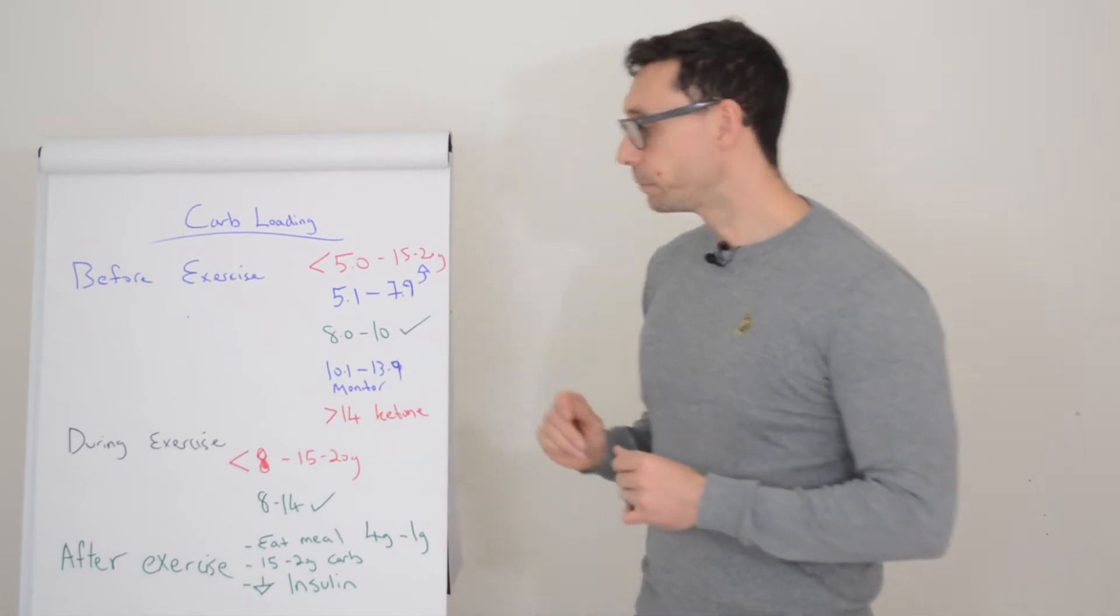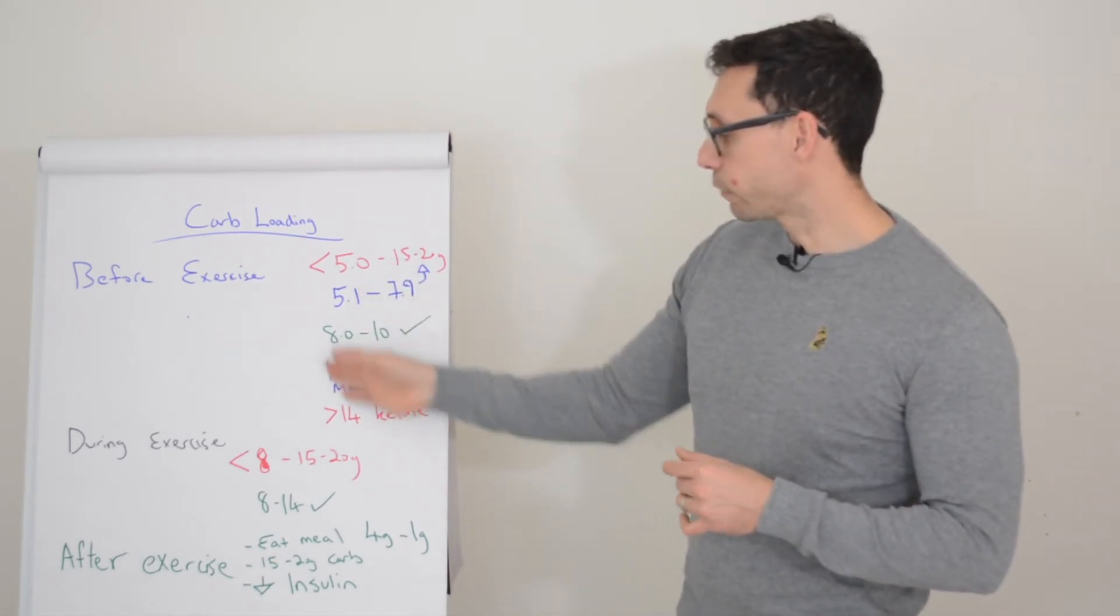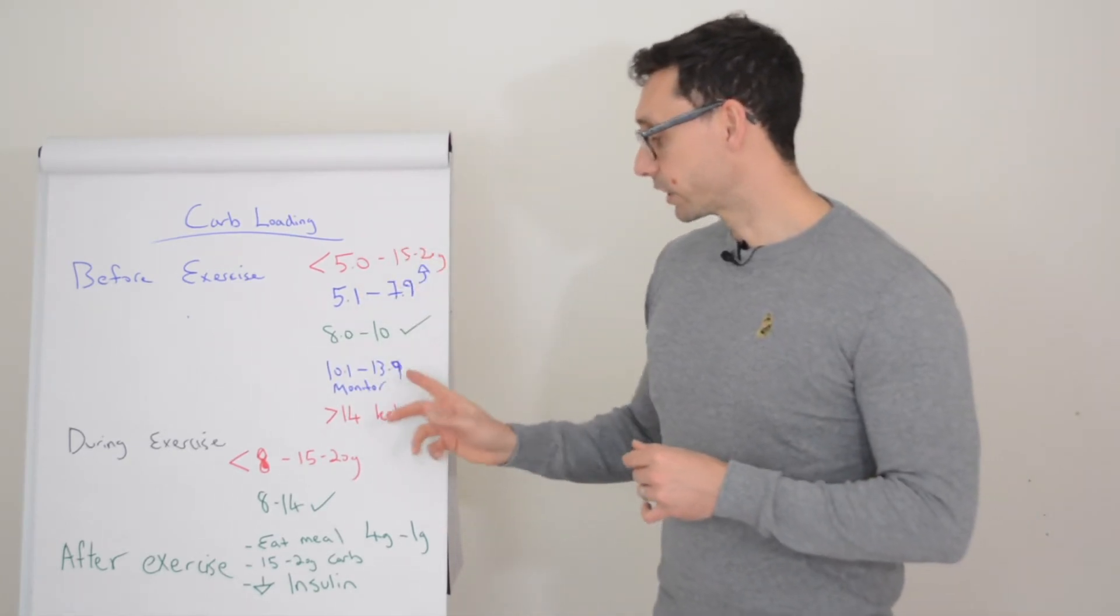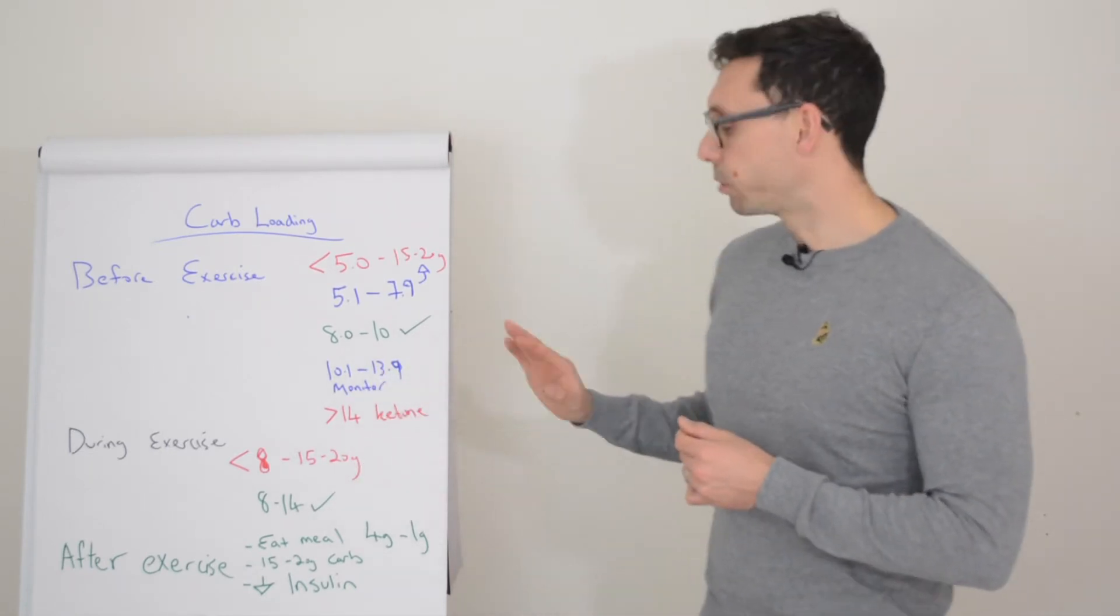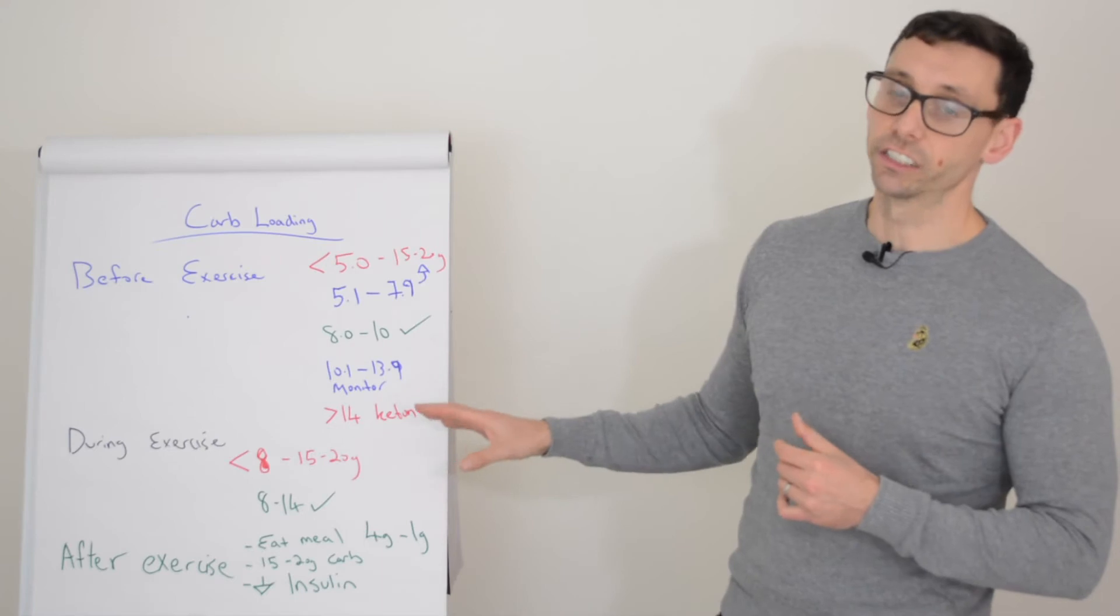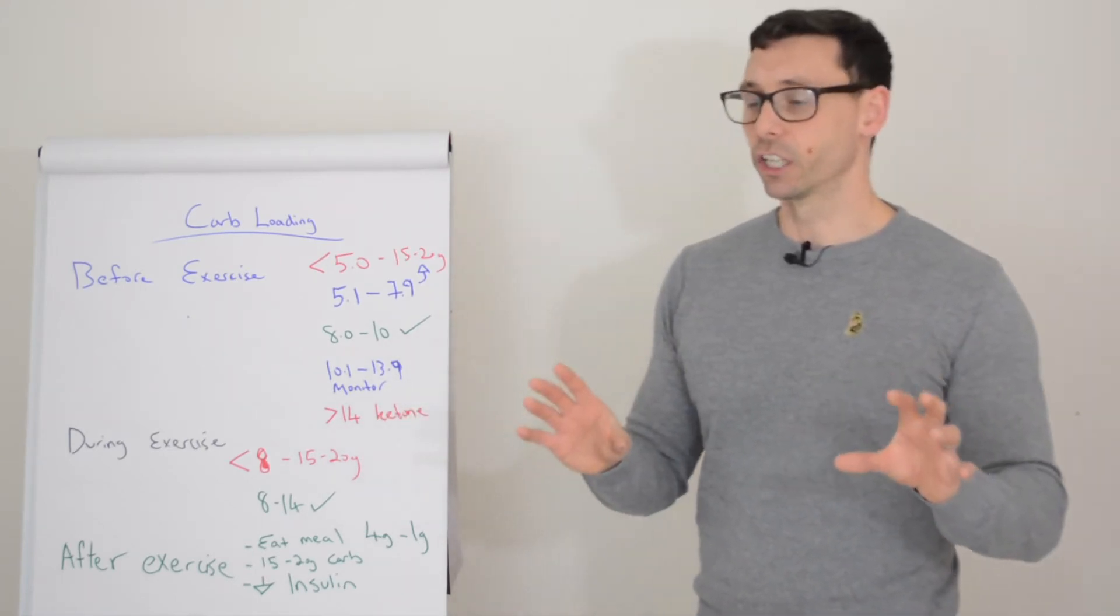So that's before exercise. Now obviously if you're satisfied that you're in the good zone and you've not got significant ketones, to be fair I'd probably say above 1.5 would be enough for me to not do the exercise session so anything above that maybe consider not exercising.